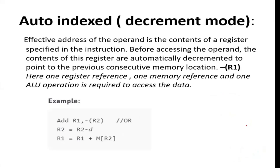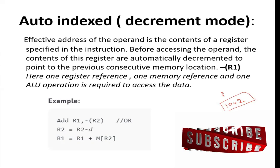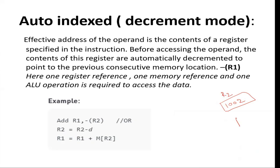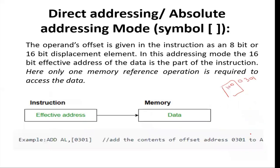Next is auto-indexed decrement mode — exactly the opposite of increment mode. Here we decrement: if register R2 contains 1002, we decrement it by one and get 1001 as the effective address. At memory location 1001 we will have our data on which we have to perform the operation.